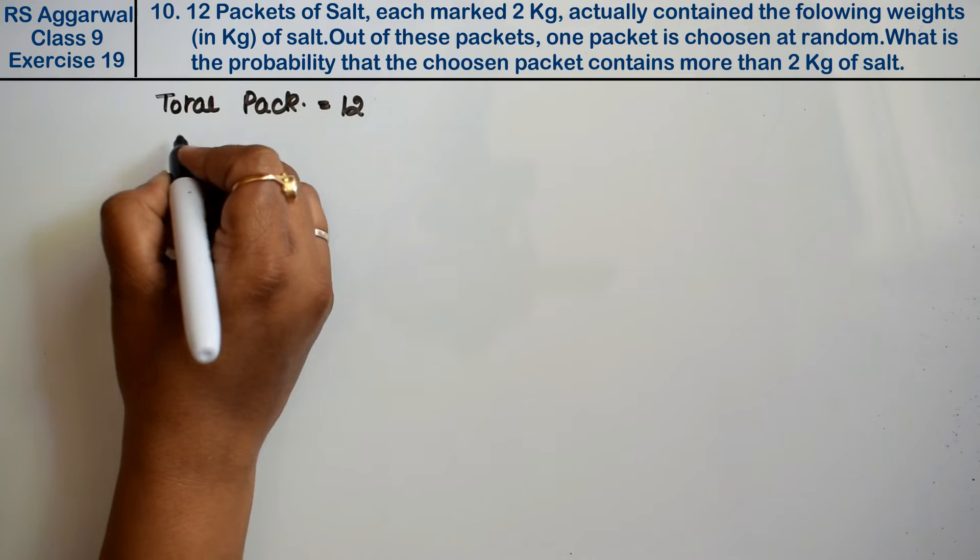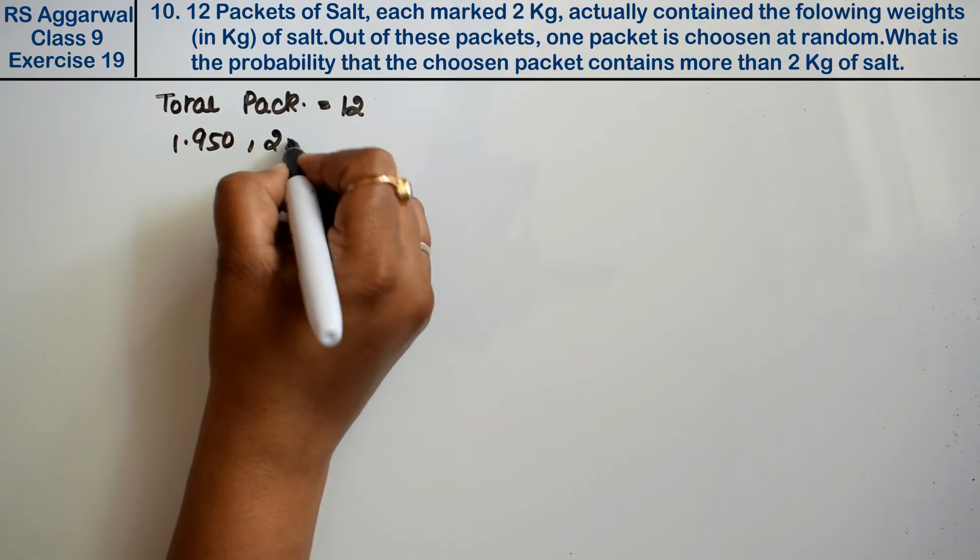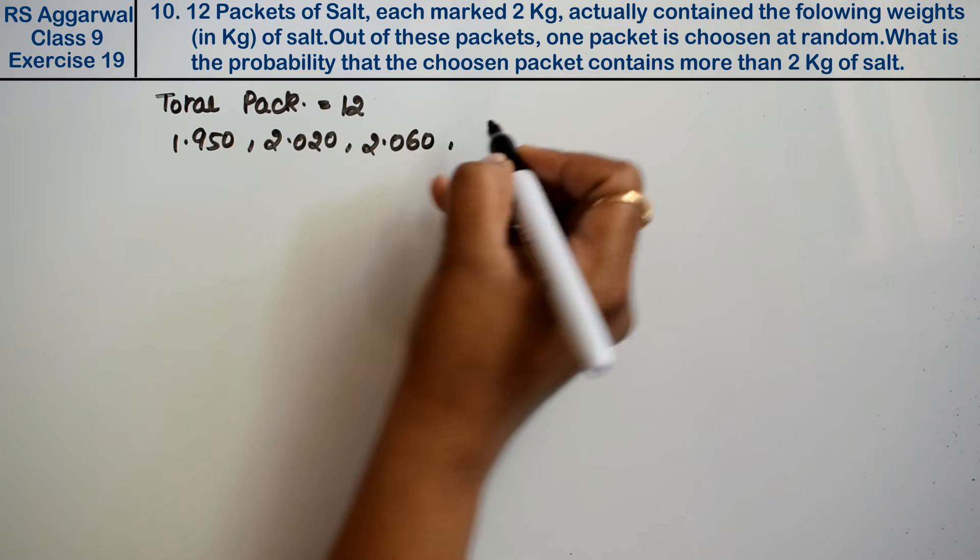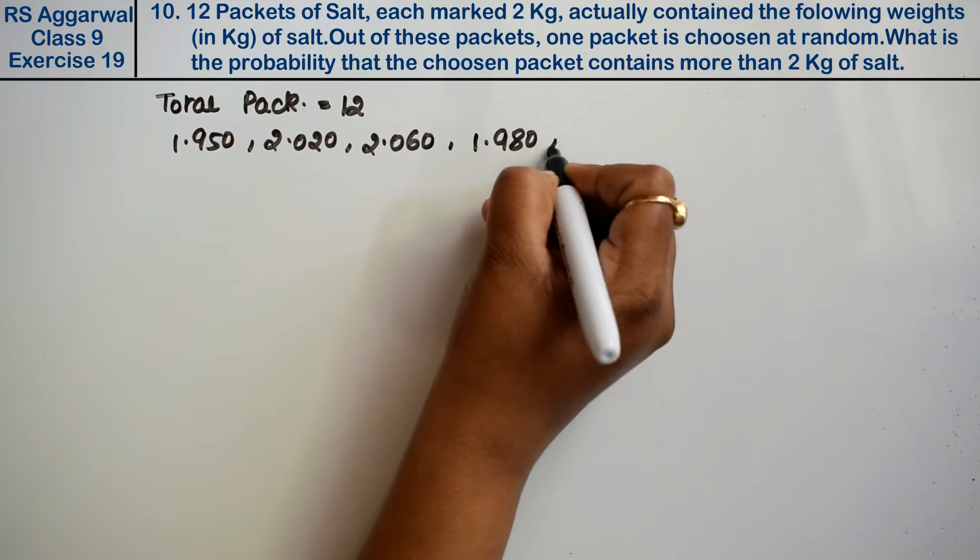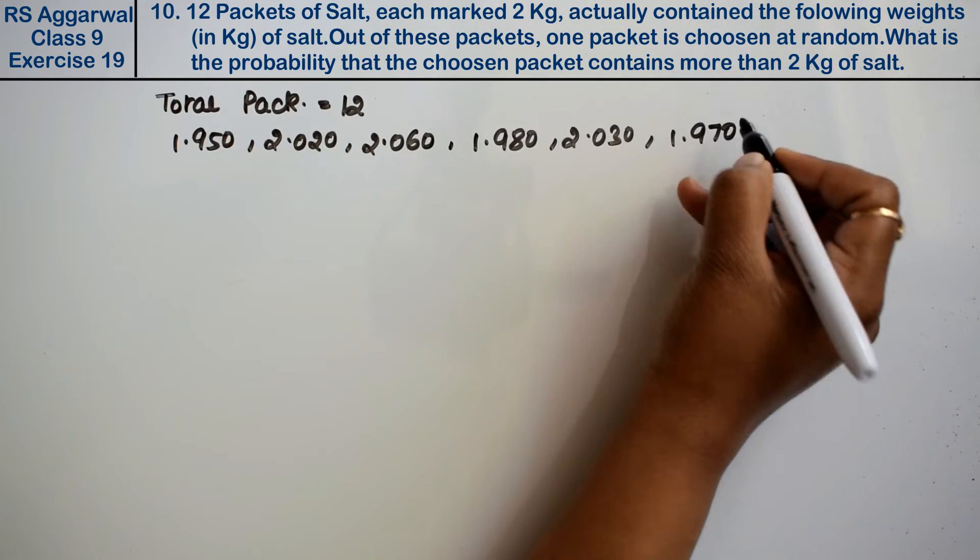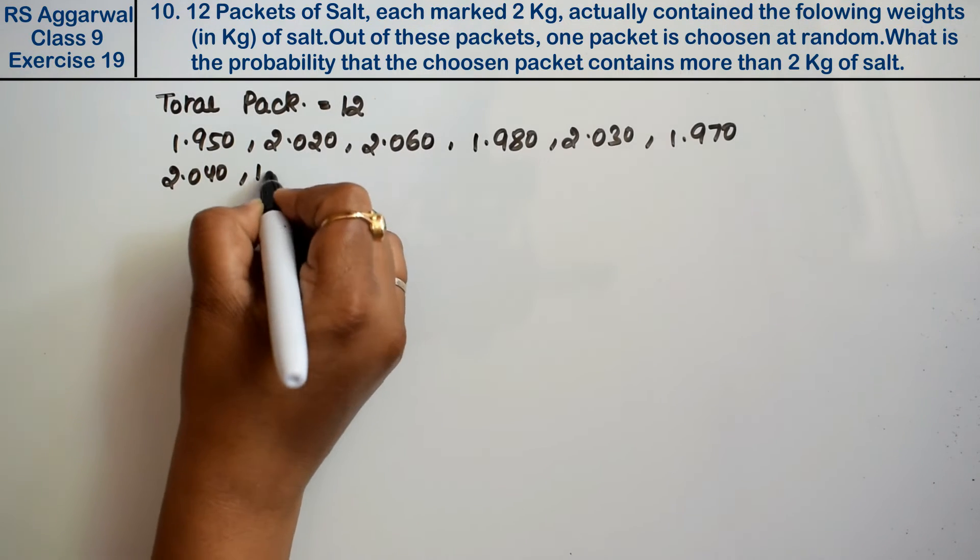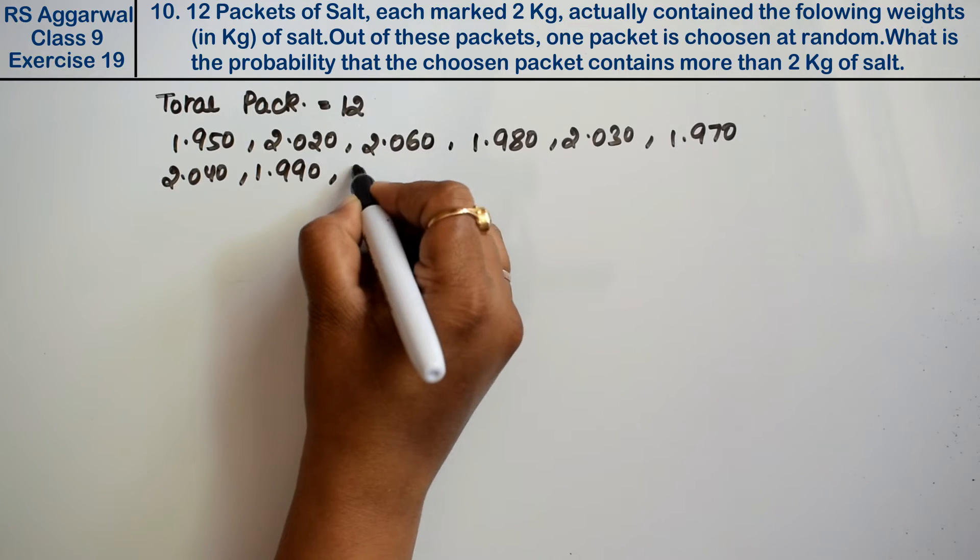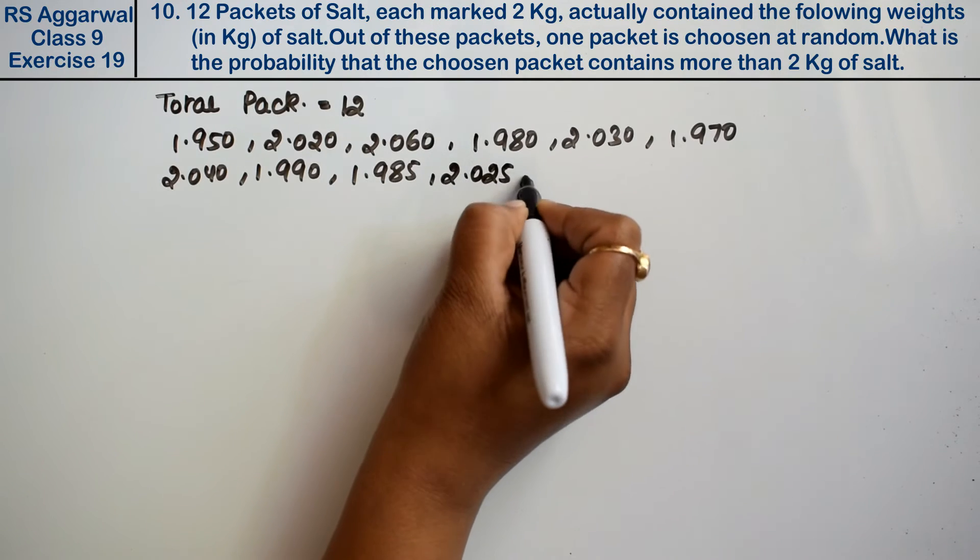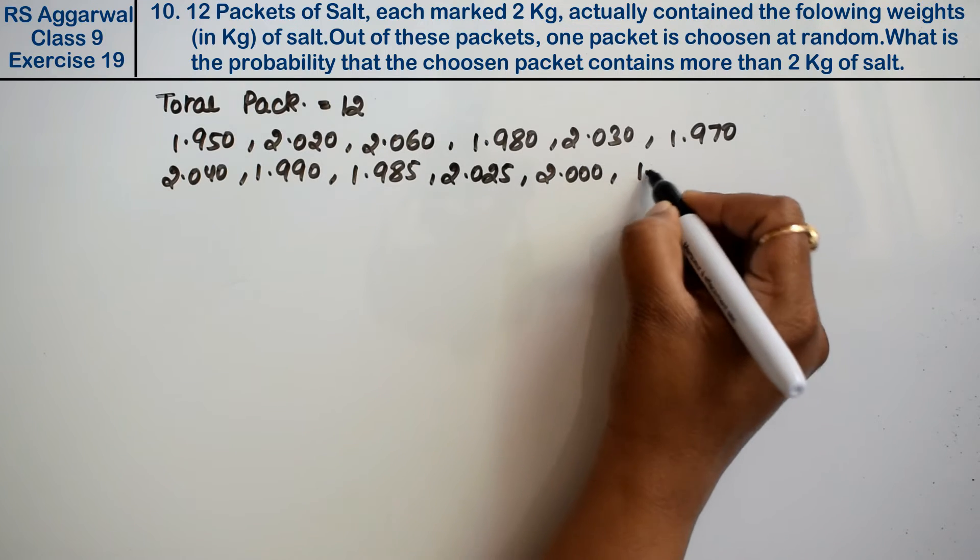The weights given are: 1.950, 2.020, 2.060, 1.980, 2.030, 1.970, 2.040, 1.990, 1.985, 2.025, 2.000, and 1.980.